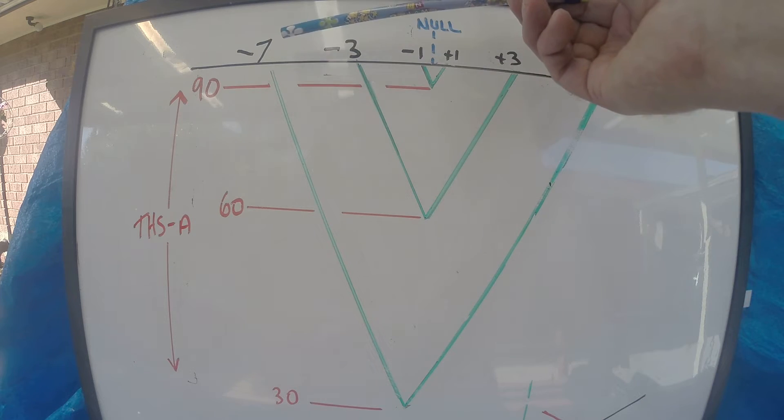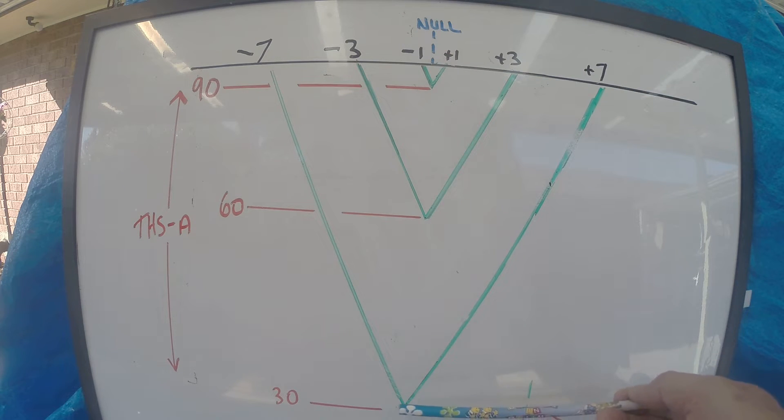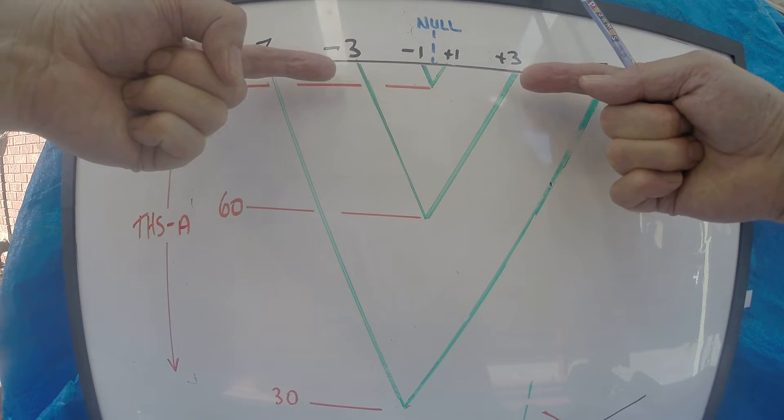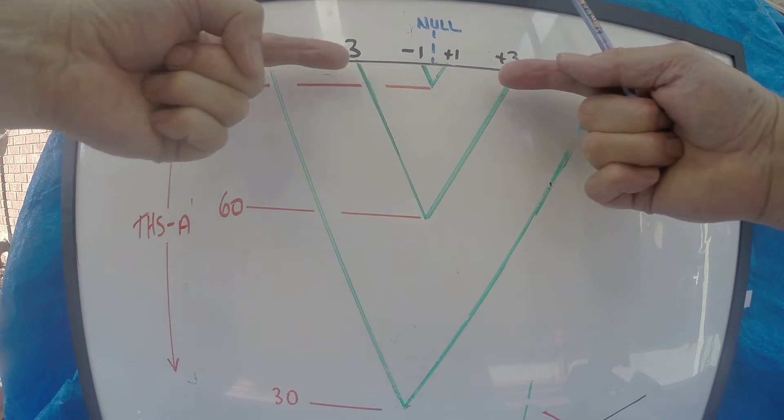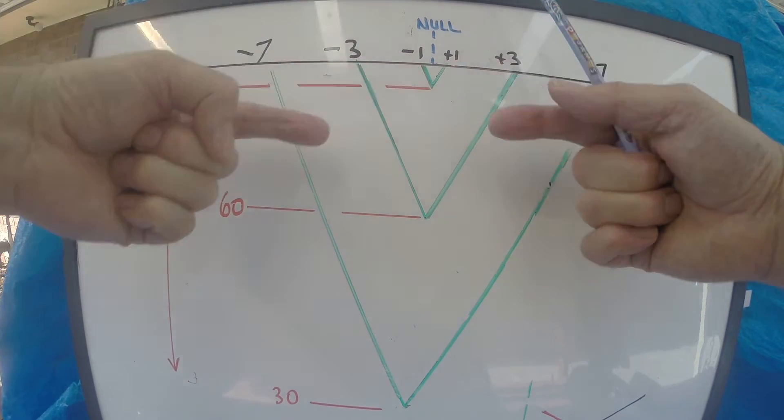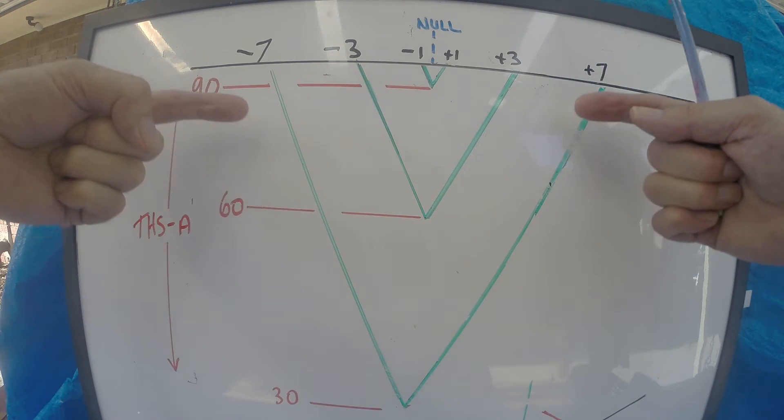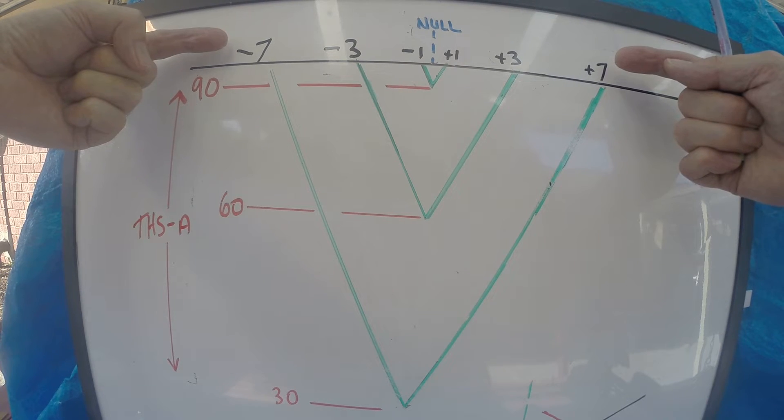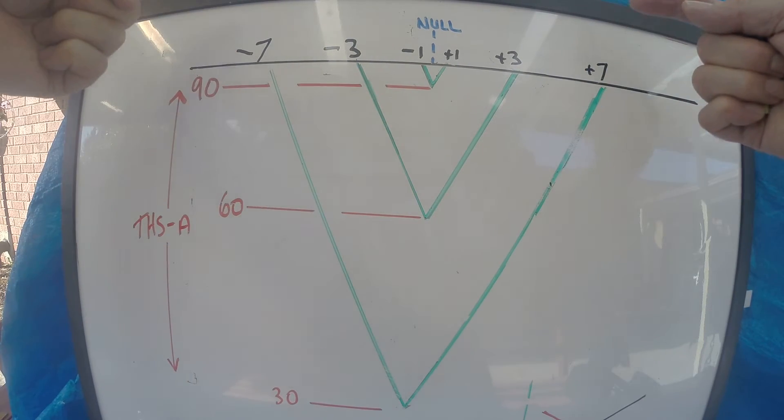Now, this is a very important relationship. So, what it shows is, as you're going up in Threshold A, your usable band of Threshold B decreases. So, at 90, you've only got about 1 either way of NULL, and at 30, you've got probably plus or minus 7 around NULL. So, that's a very important relationship.